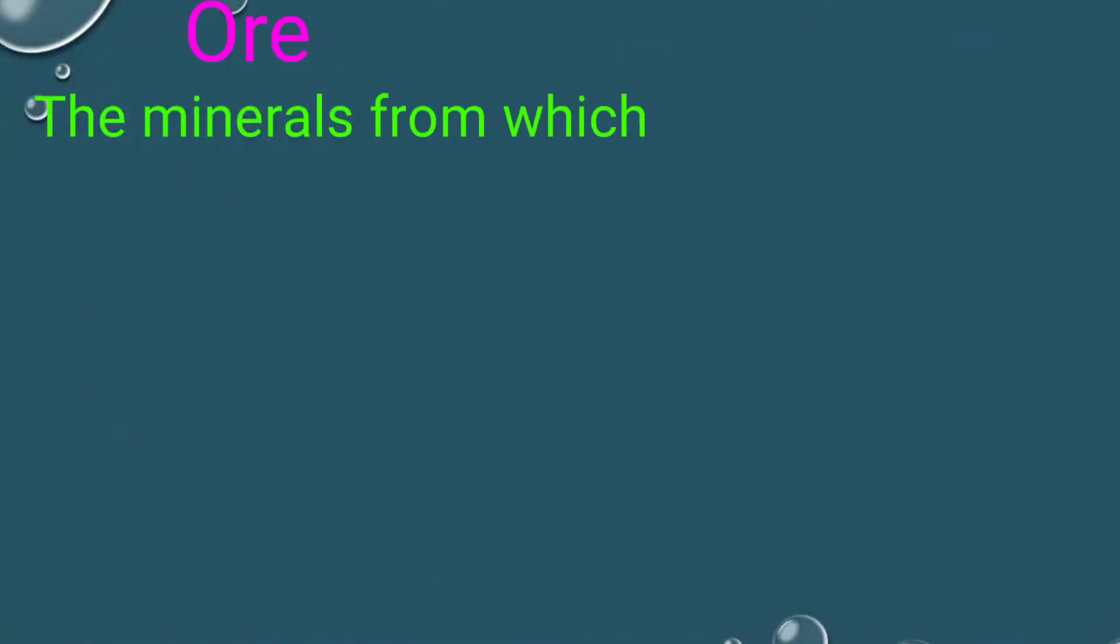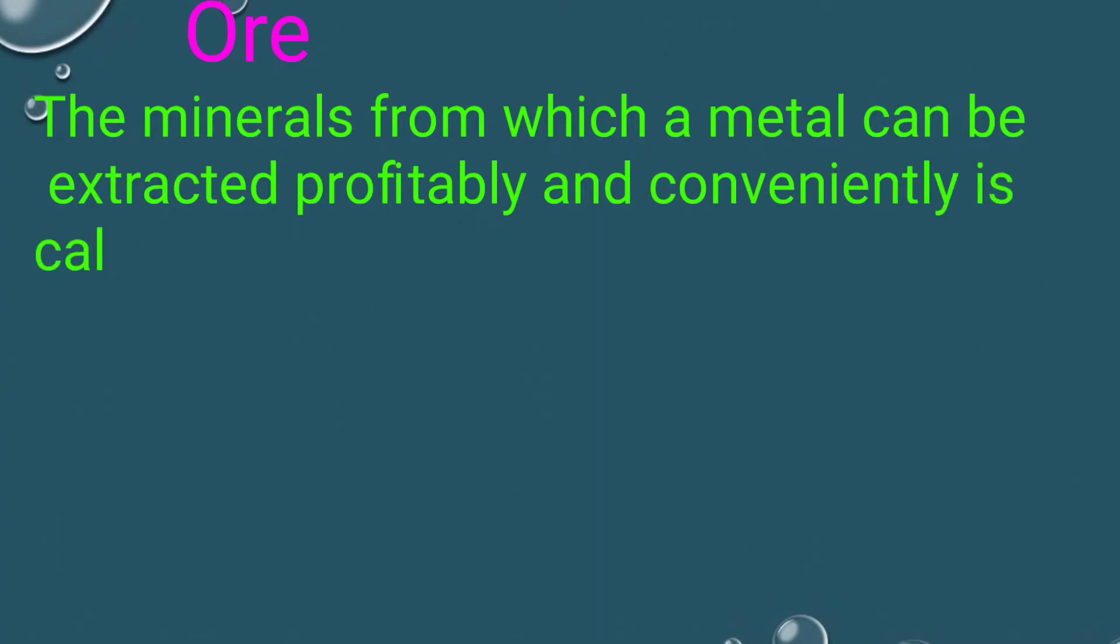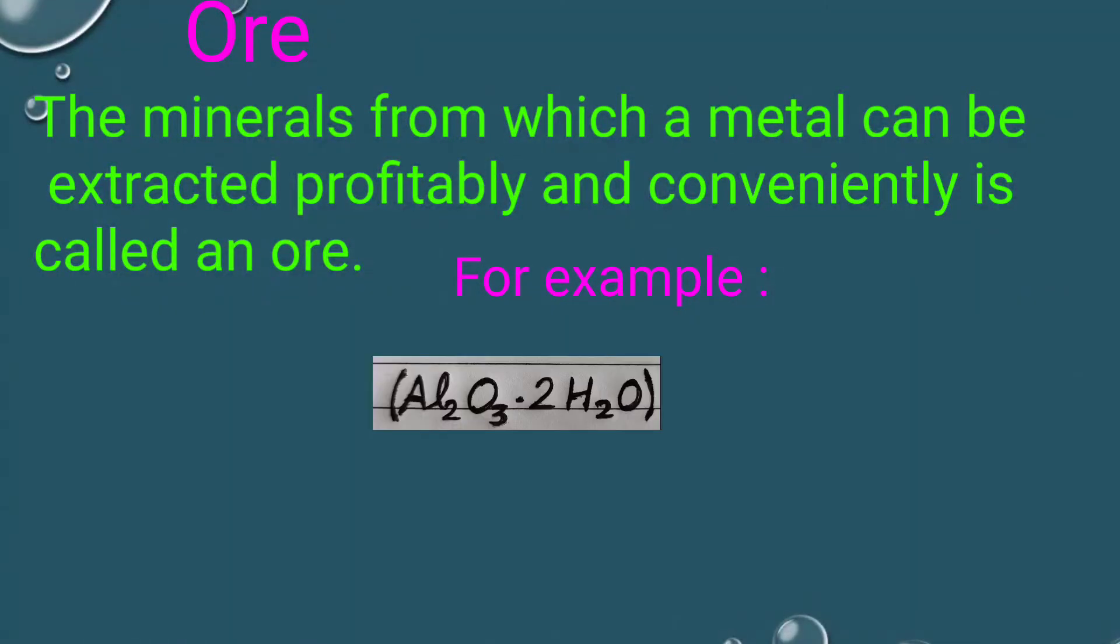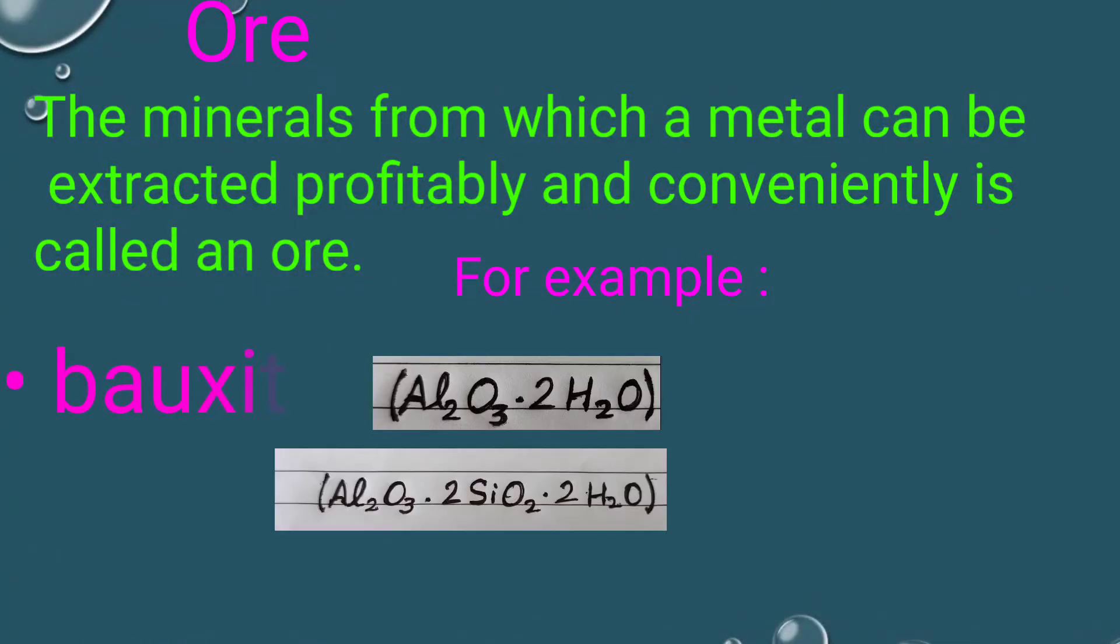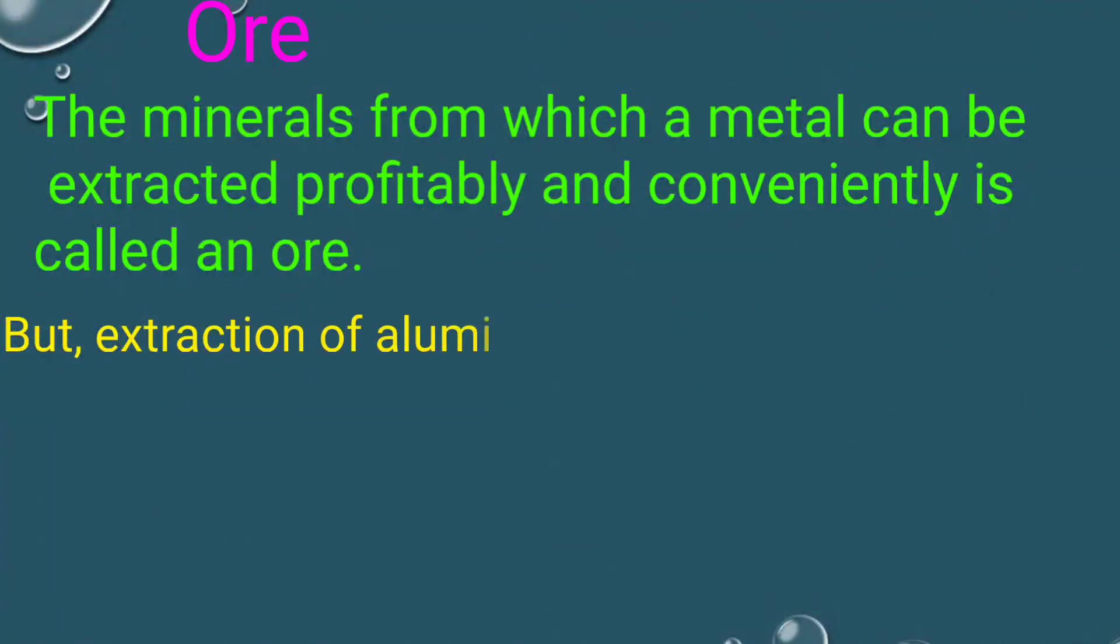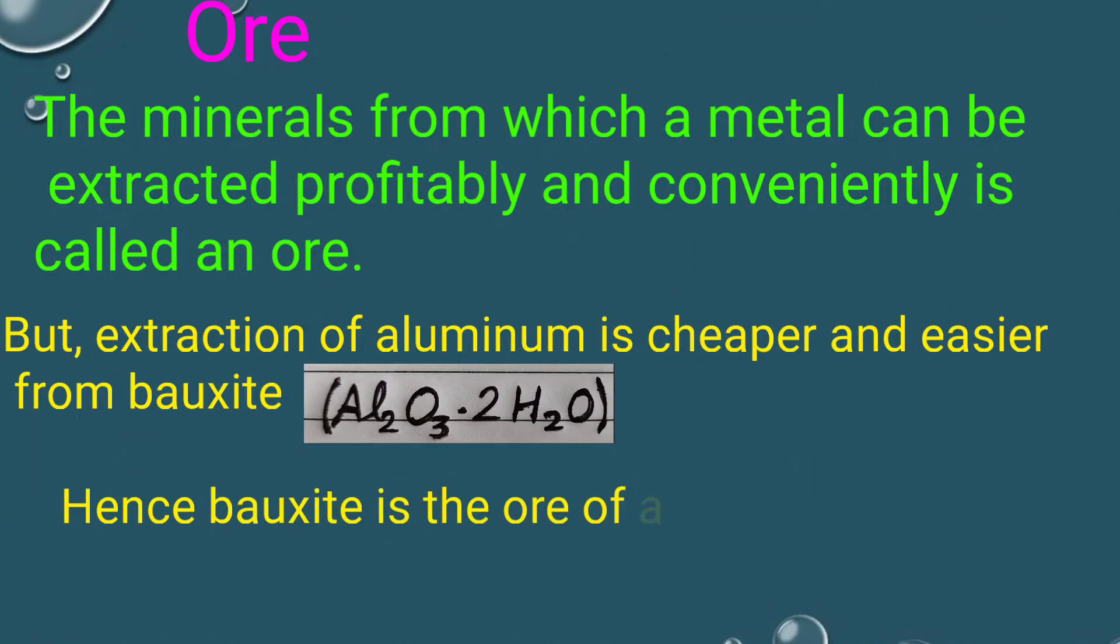Ore: the minerals from which a metal can be extracted profitably and conveniently is called an ore. For example, bauxite and clay. But extraction of aluminum is cheaper and easier from bauxite, hence bauxite is the ore of aluminum.